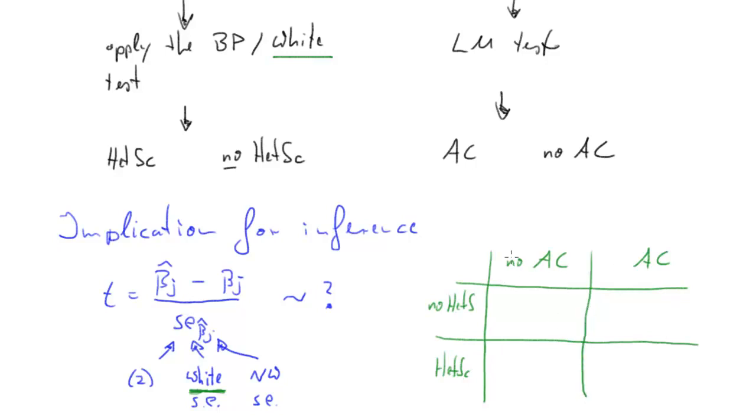Let us start with this case, this first case here. This is basically the case where the Gauss-Markov assumptions hold. In this case, for the standard error calculation, we use the normal standard errors. We use equation 2 to calculate the standard errors, and the t-test is t-distributed. So that was the ideal case.